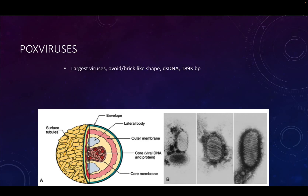Poxviruses are the largest viruses we are going to talk about by size. They also have a really large genome — a double-stranded DNA genome of approximately 190,000 base pairs.